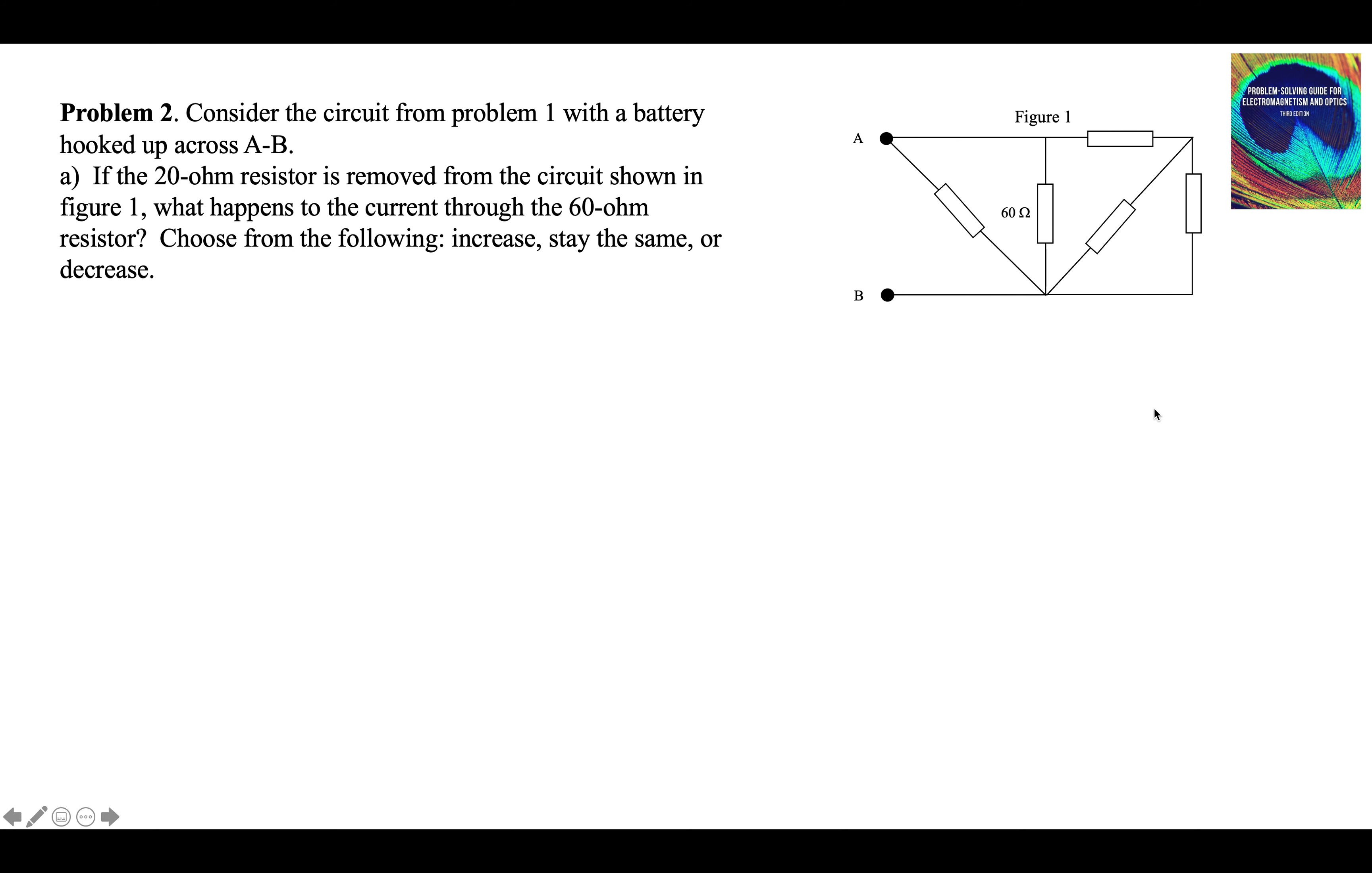If we take away the 20, the missing resistor was right here. That's gone. What happens to the current through the 60?